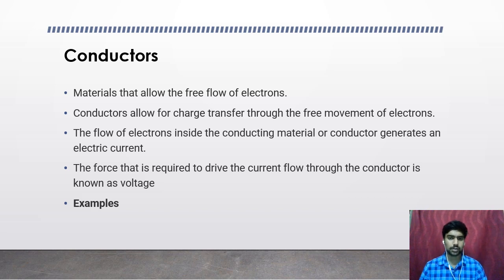Some of the examples of the conductors are aqueous solutions of salts, metals like iron, silver and gold. Copper is one of the good conductors because of which we use them in wiring. Silver is actually a better conductor than copper, but since copper is economical we use copper instead of silver in wiring and other materials.